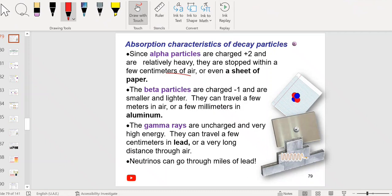But beta particles, they're charged like electrons, they're charged with negative charge, they're smaller, they're lighter so they can penetrate more in air. They travel more, a few meters in air and few millimeters they can penetrate the aluminium foil.